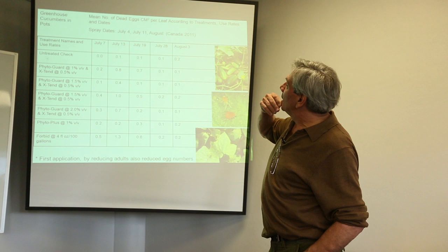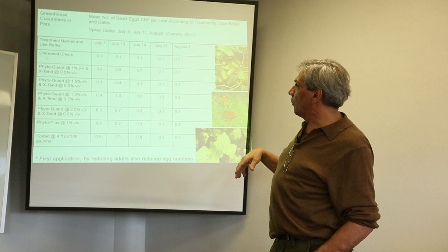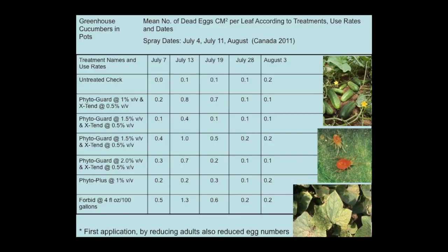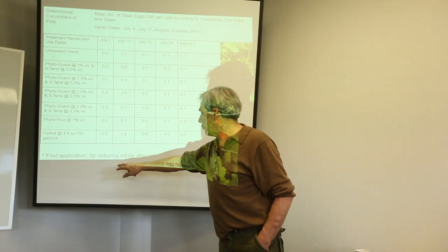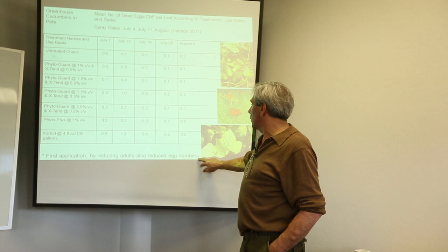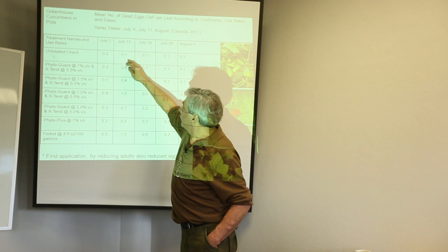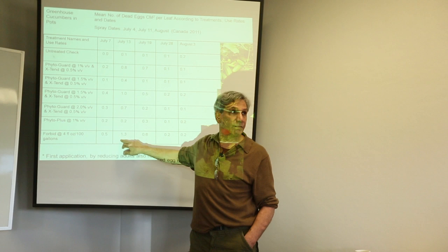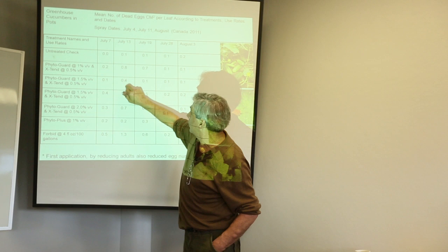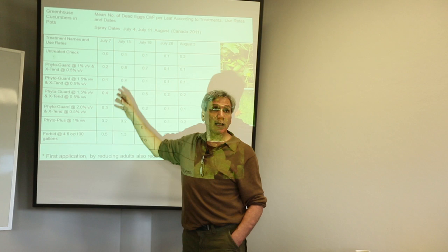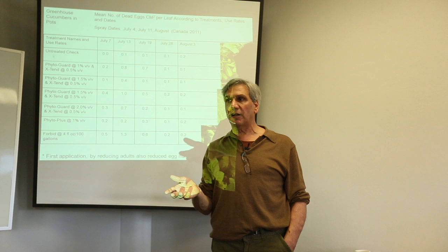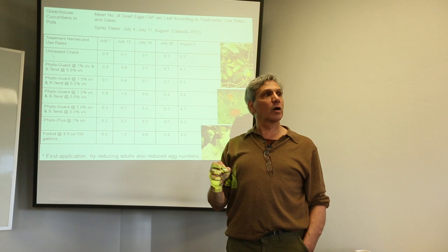This research was done by a certified consultant in Quebec, Canada, testing at half percent, one percent, one and a half percent, and two percent dilutions of Phyto Guard and a variation called Phyto Plus. The first application reduced adult mite numbers, which also reduced egg numbers. Compared to the conventional insecticide Forbid, which had the highest control, we were close at the higher concentrations. On dead mite counts, at the very end we ended up with similar results — not quite as good as Forbid, but good enough.